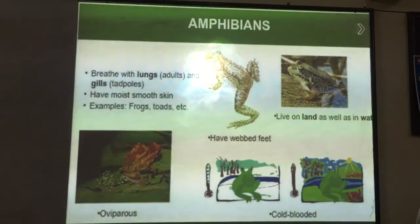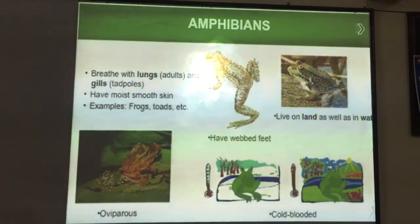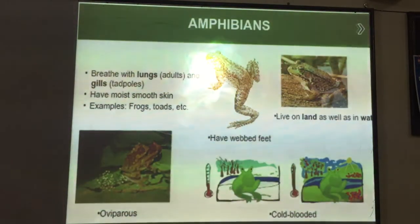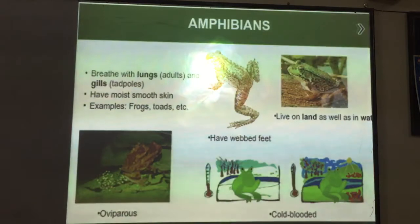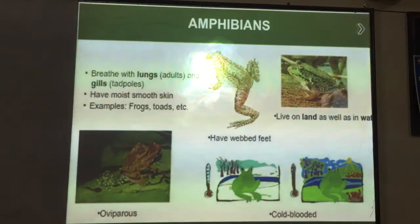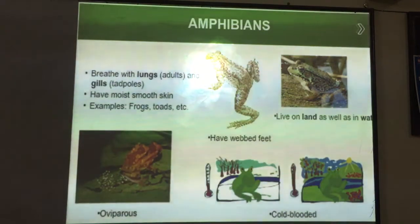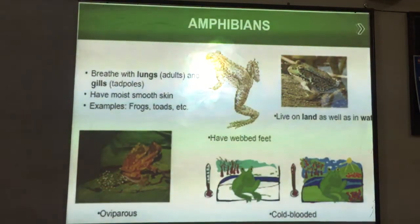Then we have amphibians. Amphibians can live on both land and water. Examples of amphibians are frogs, toads, and salamanders. They usually have lungs when they are adults, but when they are in their premature forms — in their younger life stage — they have gills, because at that time they survive in water. They have moist skin and webbed feet so that they can easily swim in water.